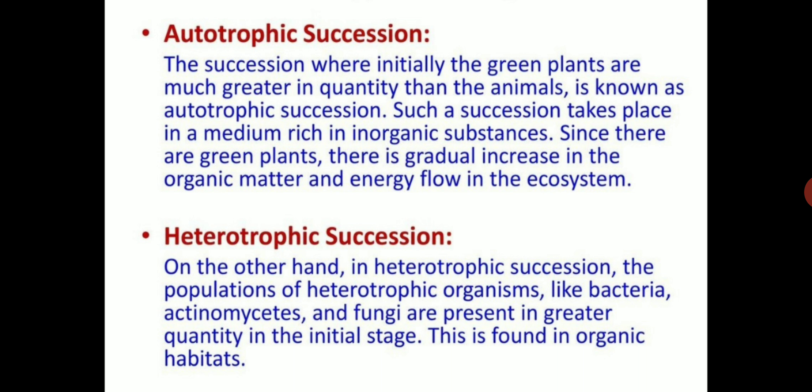Autotrophic succession is where initially green plants are much greater in quantity than animals, and it takes place in an inorganic environment. In heterotrophic succession, the population of heterotrophic organisms is greater than autotrophs. It occurs in an organic environment. An example is a sewage pond, where bacteria and other heterotrophs are first to colonize.